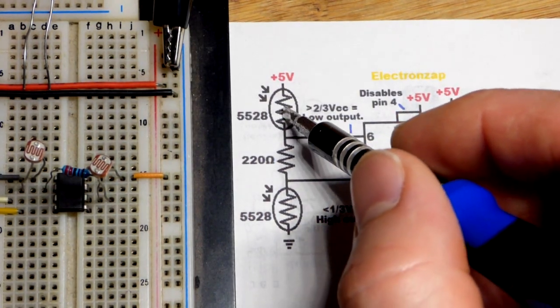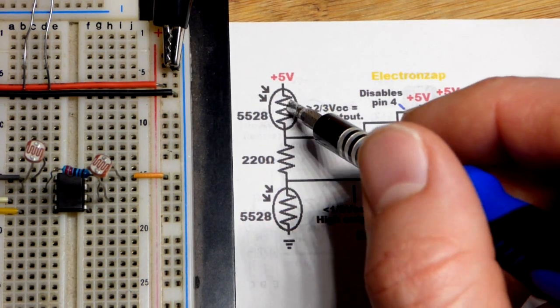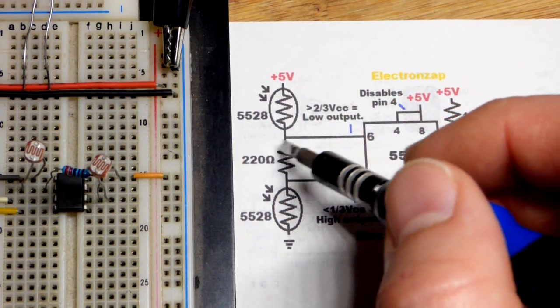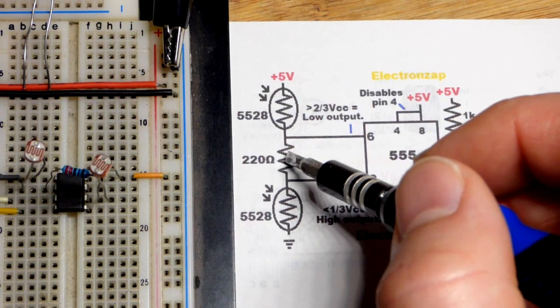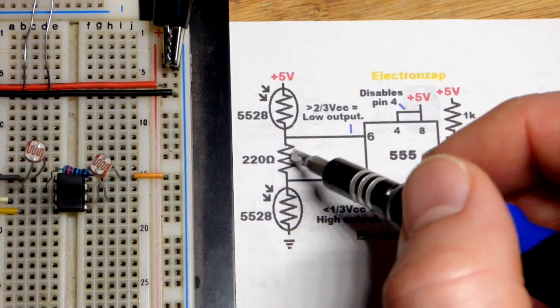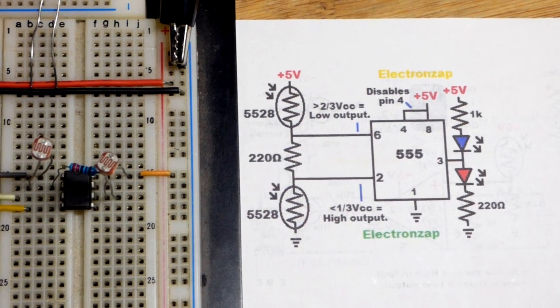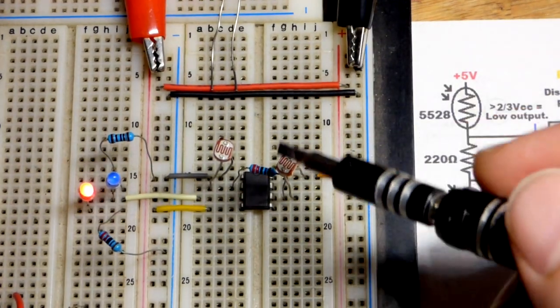When you see light dependent resistors in schematics, a lot of times things would be bad if the light was bright enough that it would be a short circuit. So it's a good idea to get some resistance, a little bit of resistance along the way to make sure to minimize that. Hopefully that makes sense.